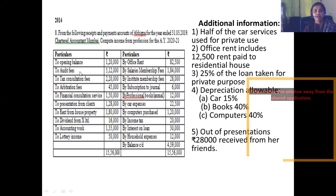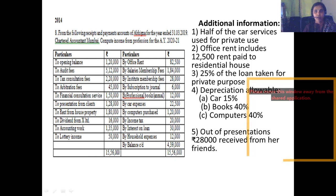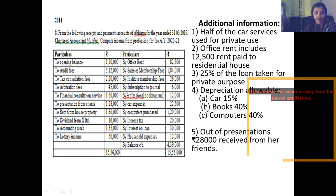Audit fees is in the regular course of profession — collected for the audit work they do. Tax consultancy involves advising clients about the amount of tax they need to pay, so tax consultation fees is very much related to their profession. Arbitration fees is again a professional receipt, and financial consultation service fees received is also a professional receipt.